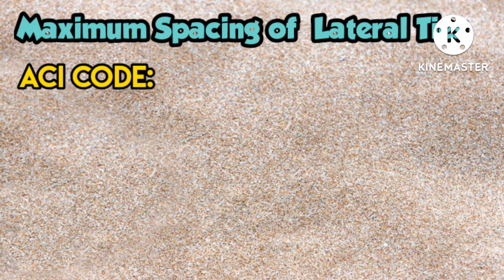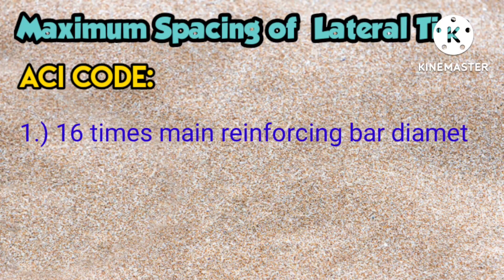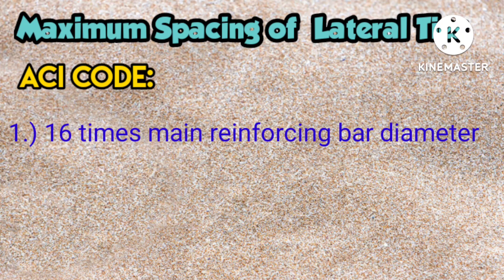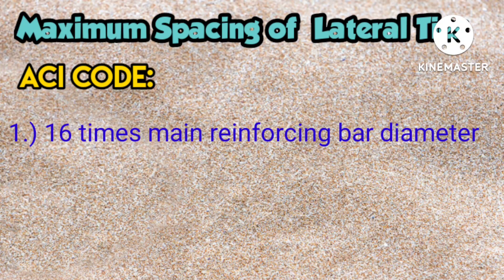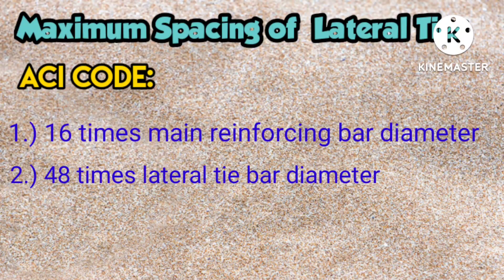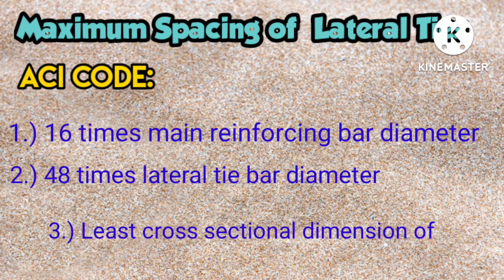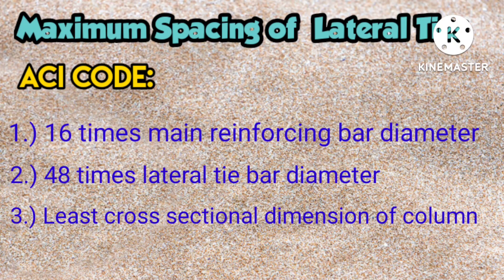According to ECI code, the maximum spacing of lateral ties is governed by the following rules, whichever is lower. First, 16 times the main reinforcing bar diameter. Second, 48 times the lateral tie bar diameter. And third, the least cross-sectional dimension of the column.